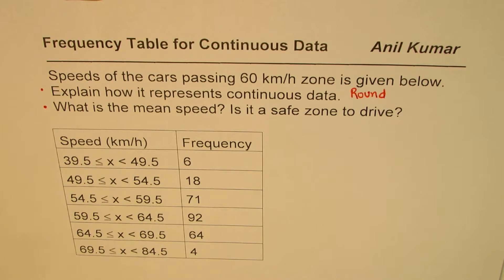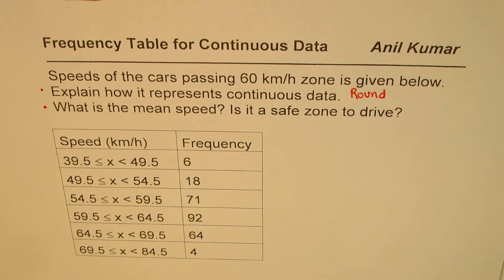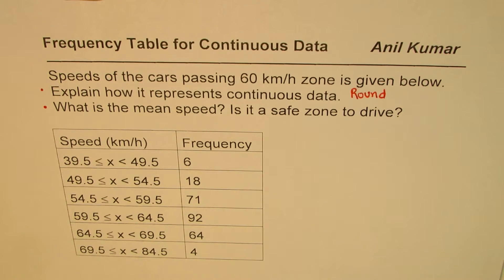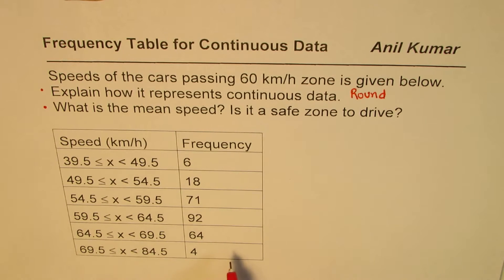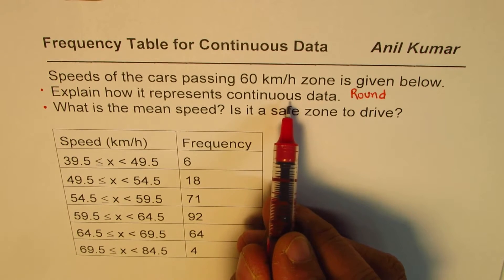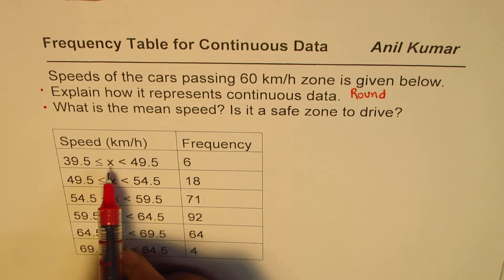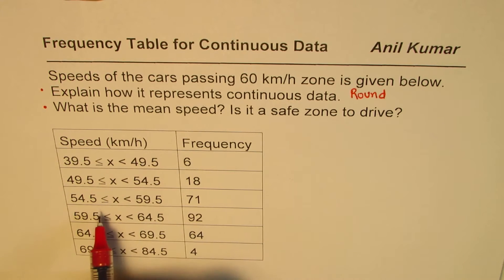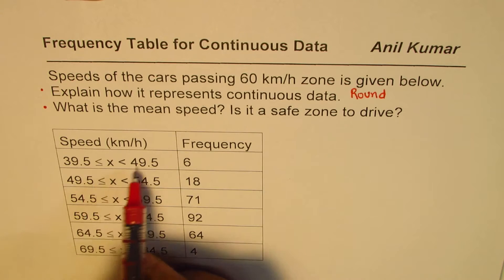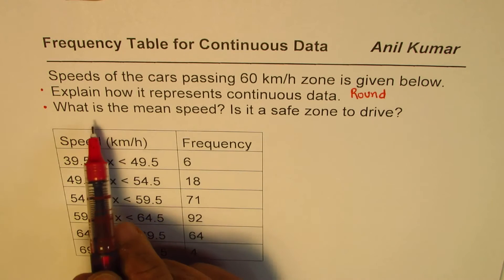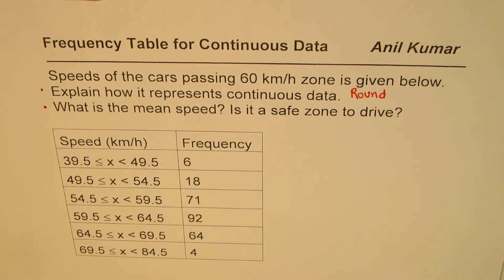In this case we've rounded numbers to one decimal place. Once you round numbers to one decimal place, you can treat this as discrete data and then analyze it. In continuous data you'll normally have intervals where one part is included, the other one is not, and the upper and lower bounds may match as shown here.